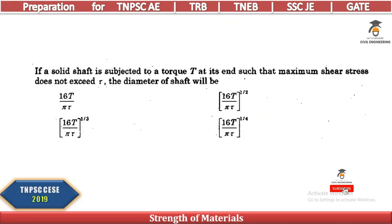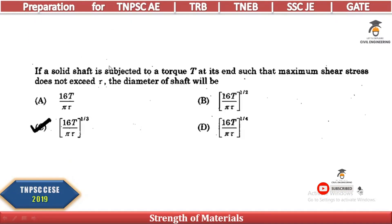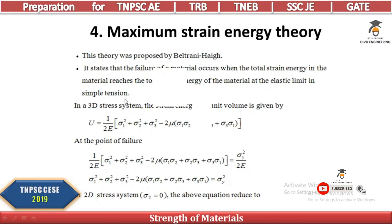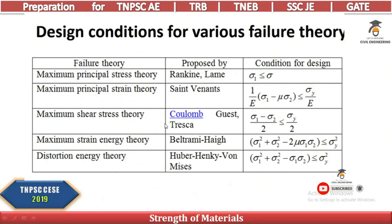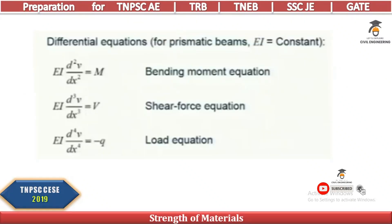If a solid shaft is subjected to a torque T with maximum shear stress τ, the diameter of the shaft is the cube root of 16T / (π·τ). If σ₁, σ₂, σ₃ are principal stresses, the maximum strain energy theory applies. For a beam with elastic modulus E and moment of inertia I, the differential equation at any section gives the deflection relationship.